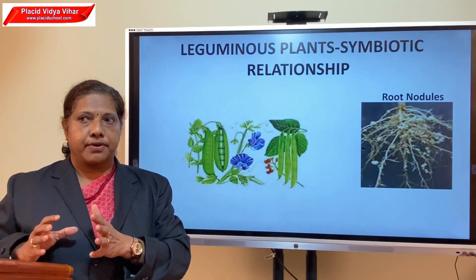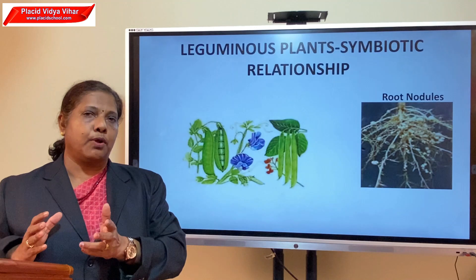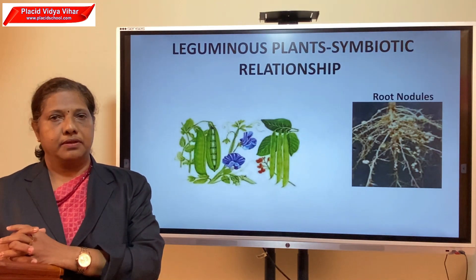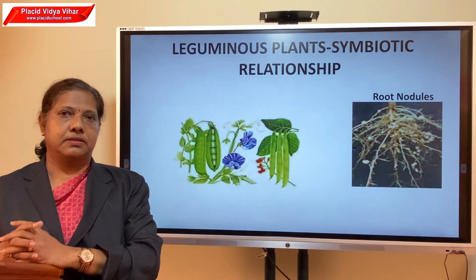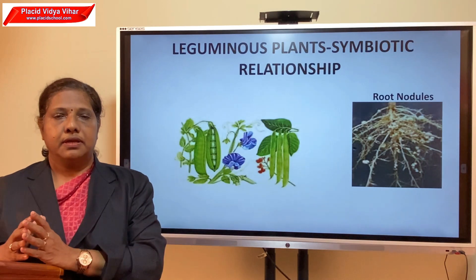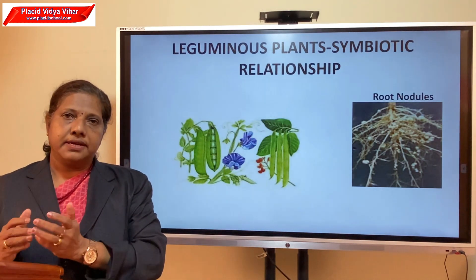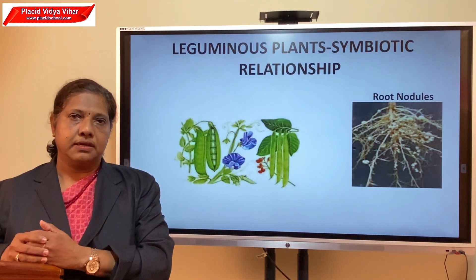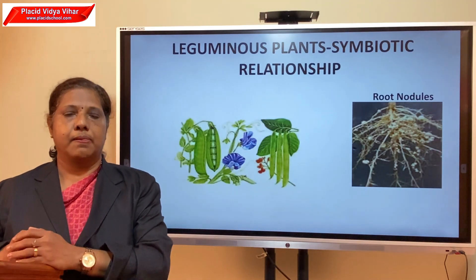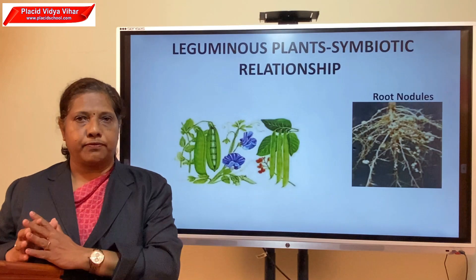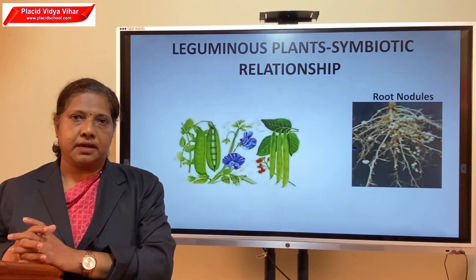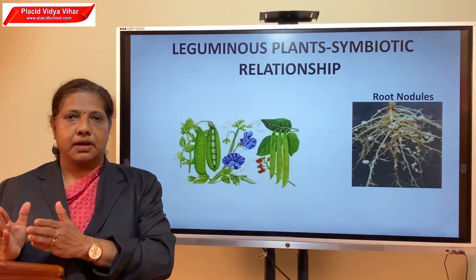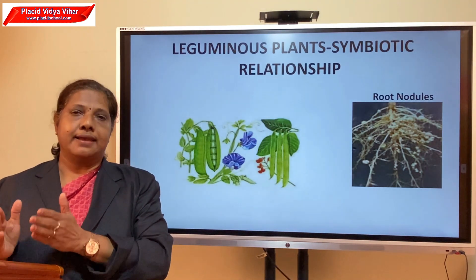Crops need a lot of nitrogen to make proteins, which are needed for plant growth, and nitrogen is a part of protein. Nitrogen is present abundantly in the air, but plants cannot take nitrogen directly the way they take carbon dioxide. Nitrogen must be converted into a soluble form first.